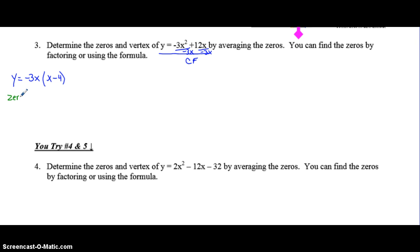Now, we need to figure out the zeros. So, let's set each factor equal to zero and solve. This one you divide both sides by negative 3. This one you subtract 4 from both sides.